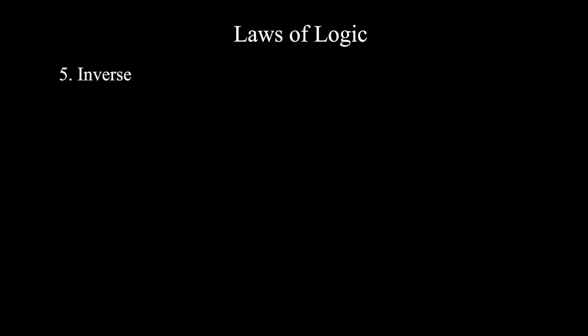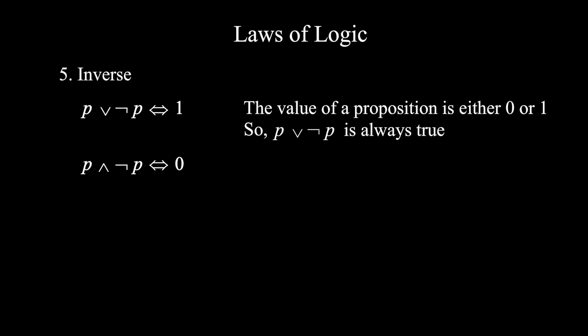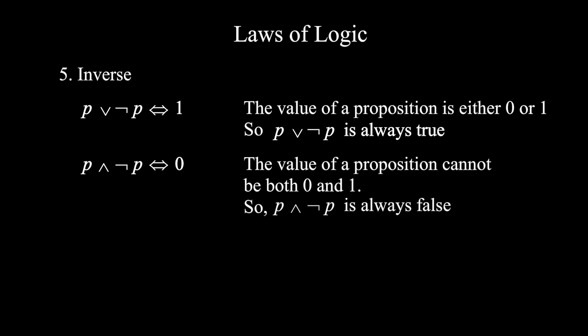Number five, inverse. p or not p is equivalent to 1. p and not p is equivalent to 0. The value of a proposition is either 0 or 1. So, it is always true. A proposition cannot have both values 0 and 1. So, it is false.